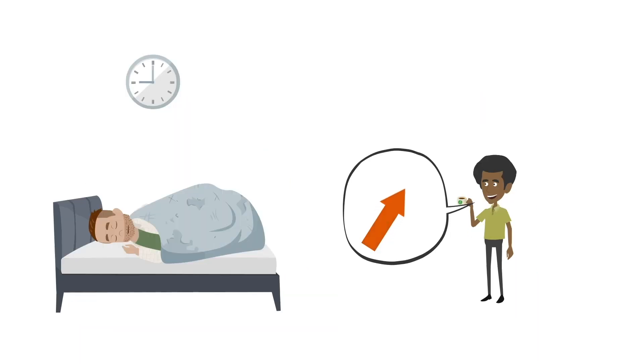Scenario four: your friend is late for school — ask him to get up. 快起来吧. Okay, that's the end of today's lesson. 再见.